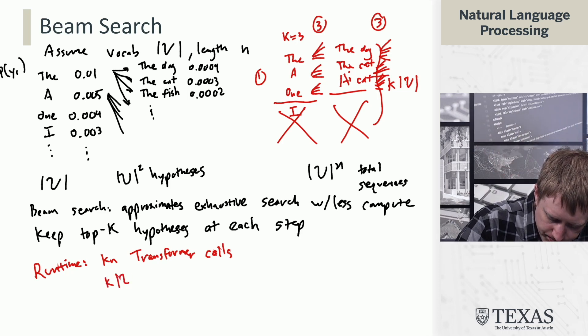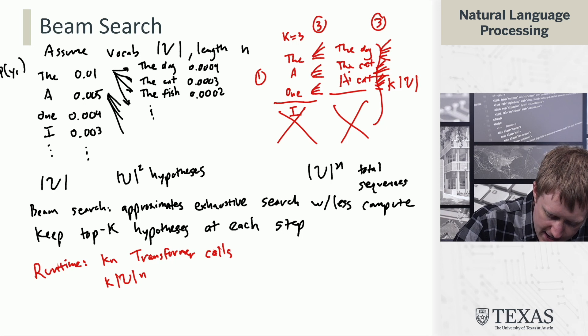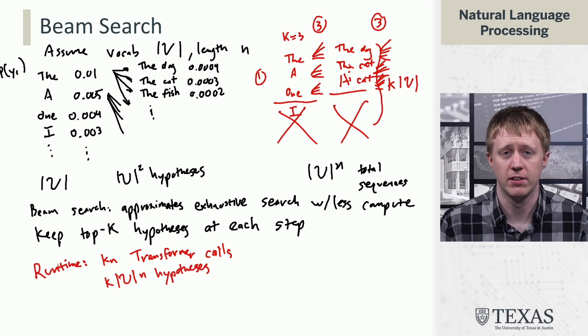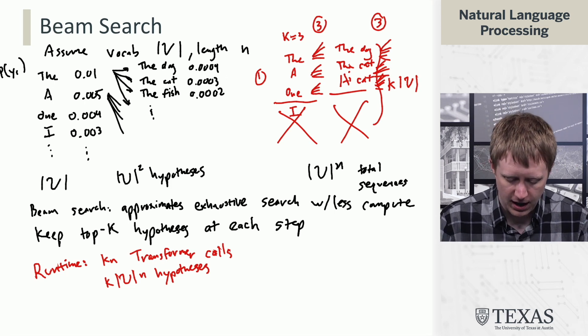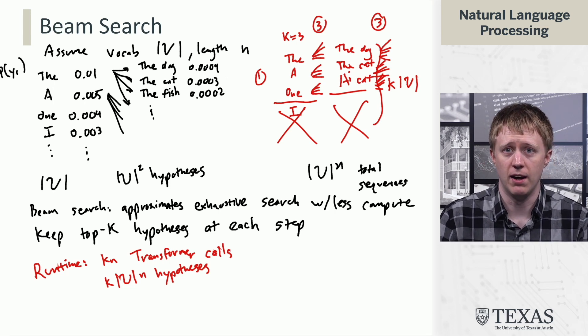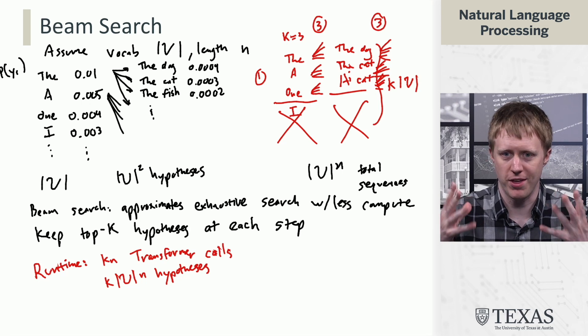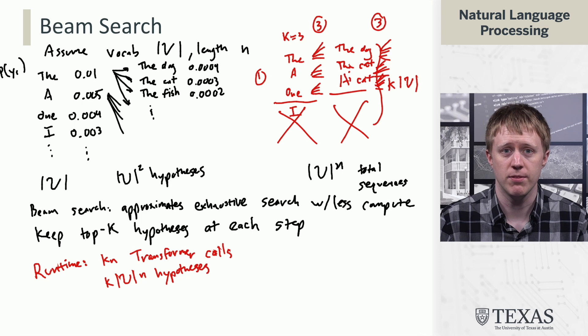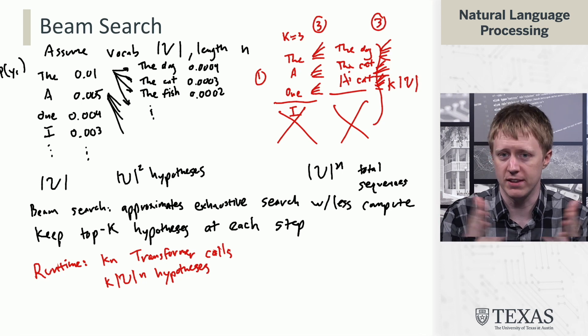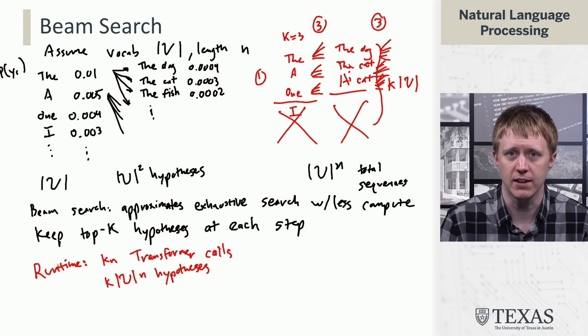And we consider k times v times n hypotheses, ultimately. So it's much smaller than v to the n. We're just not thinking about that many items, but it still allows us to explore the space in a way that scales with k.